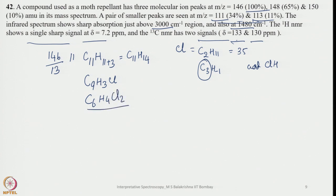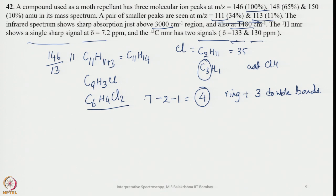Assuming C6H4Cl2, the hydrogen deficiency index is 6+1−2−1 = 4, meaning 1 ring plus 3 double bonds, which fits an aromatic group perfectly. With only 2 signals in the 13C NMR, the molecule must be highly symmetric. Placing both chlorines para to each other on the benzene ring — 1,4-dichlorobenzene — gives exactly 2 unique carbon environments.